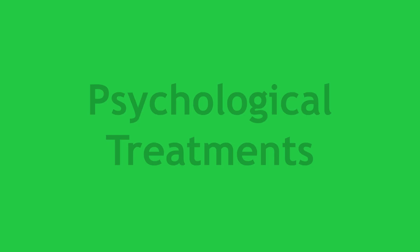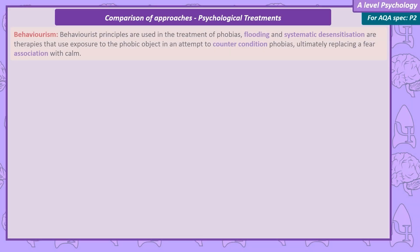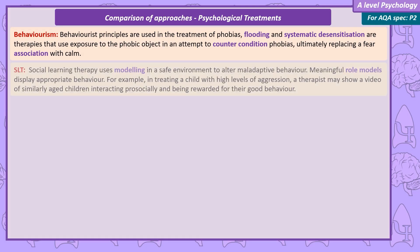Psychological treatments. Behaviourist principles are used in the treatment of phobias. Flooding and systematic desensitisation are therapies that use exposure to the phobic object in an attempt to counter-condition phobias, ultimately replacing a fear association with calm.